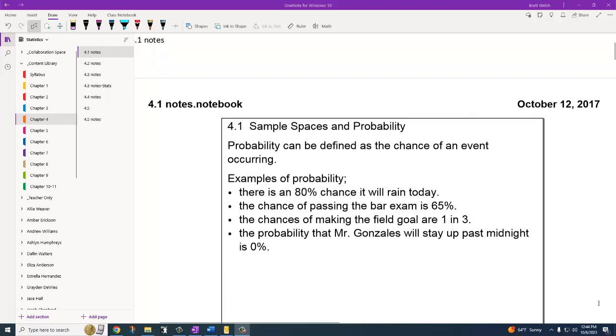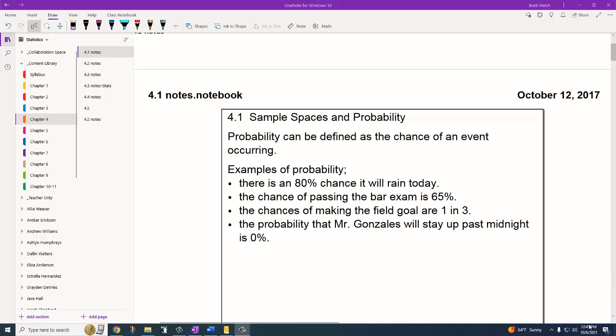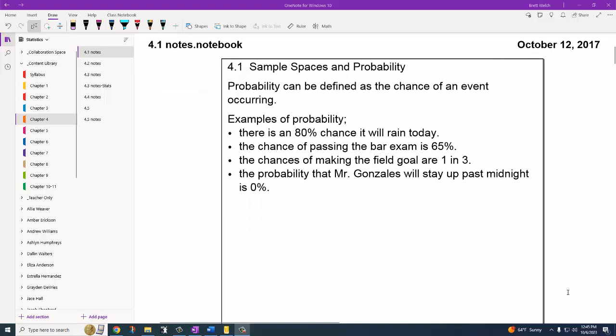Alright, so this is 4.1. We're going to start talking about probability, the kind you're more likely to have been expecting to come out of a statistics course. Here's where we start talking about probabilities like when we hear people say there's an 80% chance of rain today or chances of making a field goal are 1 in 3. Probability is the likelihood of something occurring. While we use percentages a lot to communicate probabilities to people, we are going to use the decimal equivalent for those probabilities or a fraction. So 80% probability that it will rain, we would express in our statistics course as 0.8 probability.